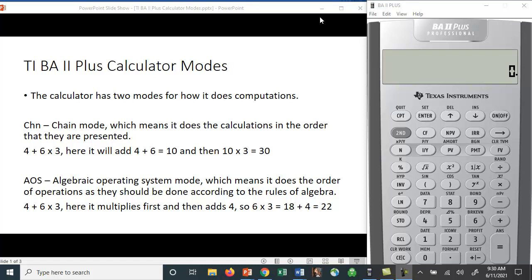The calculator has two modes for how it does computations. The default is CHN or chain mode, which means it does the calculations in the order they are presented. For example, 4 + 6 × 3: it will add 4 + 6 = 10, then multiply 10 × 3 = 30. We can see that the default is this chain mode.